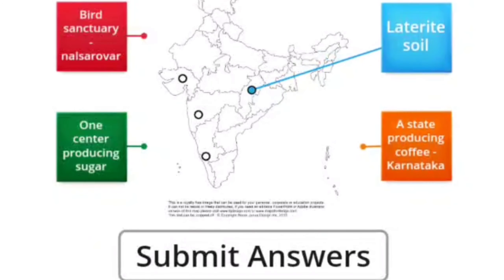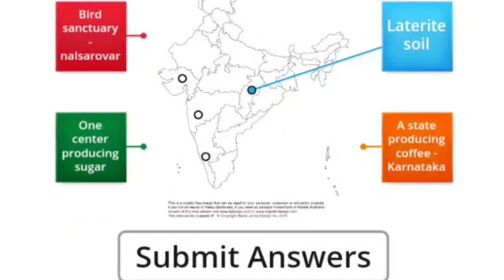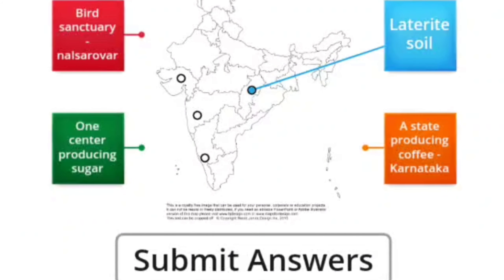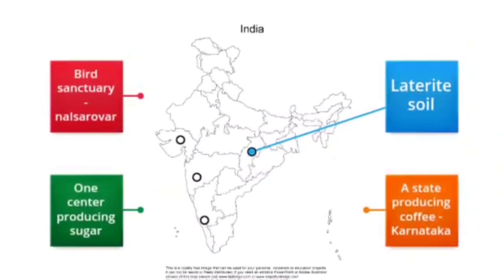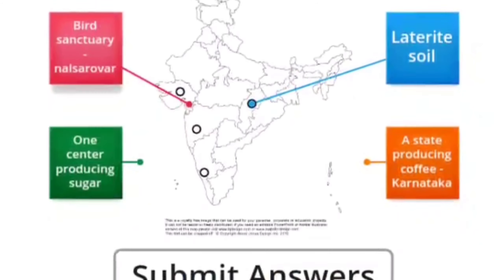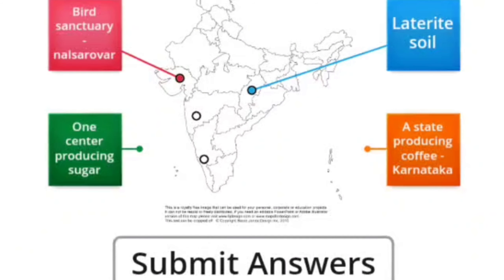Number two is bird sanctuary Nal Sarovar. Do you know where Nal Sarovar bird sanctuary is located in India? The answer is: Nal Sarovar bird sanctuary is located in the state of Gujarat.